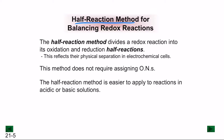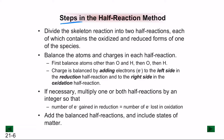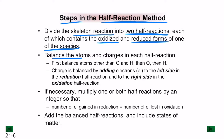One way of balancing redox reactions is the half-reaction method. We divide a redox reaction into its oxidation and reduction half-reactions, reflecting their physical separation in electrochemical cells. This method does not require assigning oxidation numbers and is easier to apply to reactions in acidic or basic solutions. The first step is to divide the skeleton reaction into two half-reactions, each containing the oxidized and reduced forms of one species, then balance atoms and charges in each.